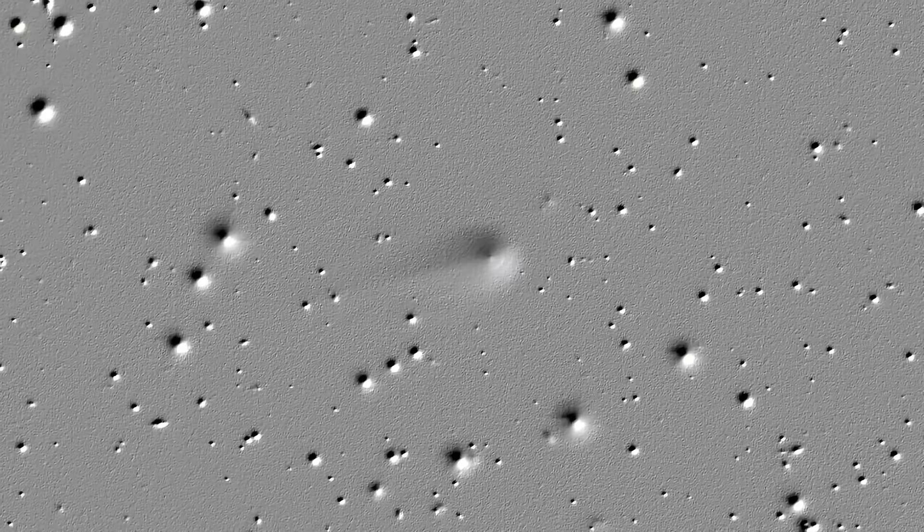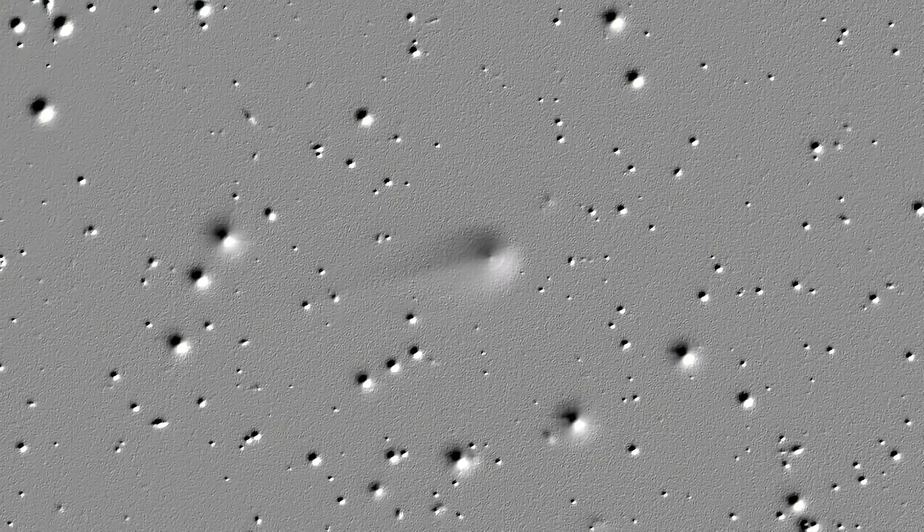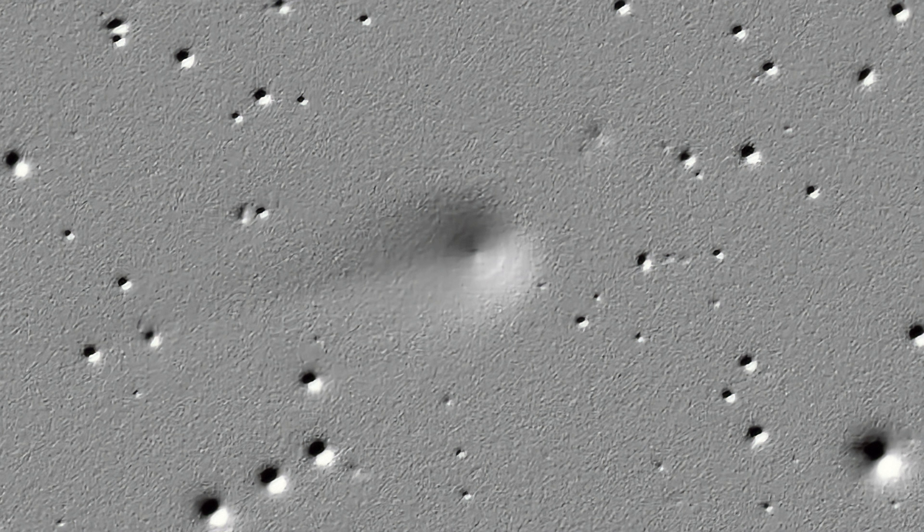At first, the world of astronomy breathed a collective sigh of relief. Unlike the weird cigar-shaped Oumuamua, this one looked like a regular comet. It had a fuzzy glow around it, a coma, which is exactly what you'd expect from a giant ball of ice and dust getting closer to the sun. Case closed, right? Wrong. The thing nobody tells you is that the more we looked, the less sense it made.